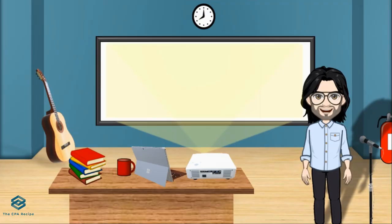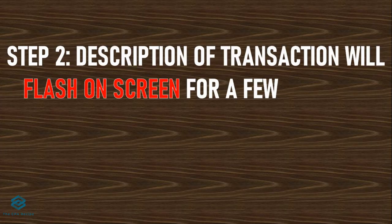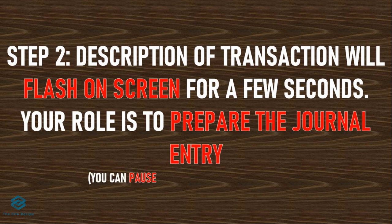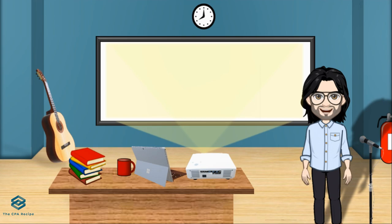Remember, a Chart of Accounts is simply a listing of the accounts of an entity. Step 2: I'm going to flash the description of the transaction on the screen, which will hold on for a few seconds, and your role is to prepare journal entries for each transaction. If you need time to think about which account to use, what to put in debit and credit, you can pause the video to buy yourself some time.